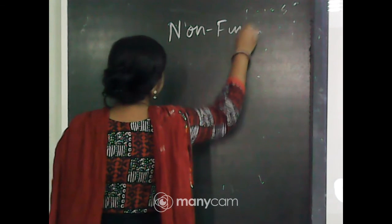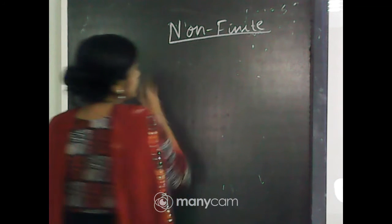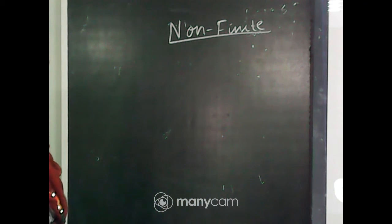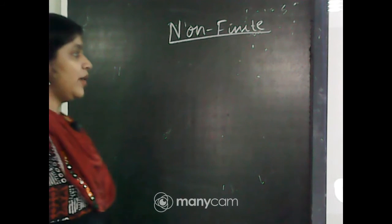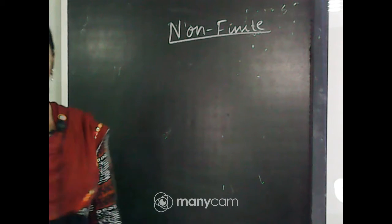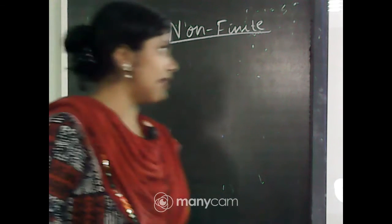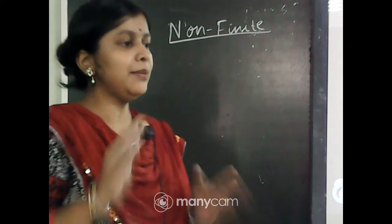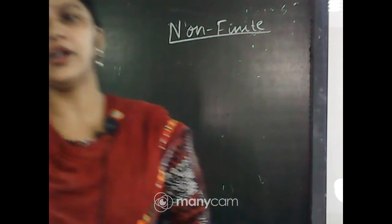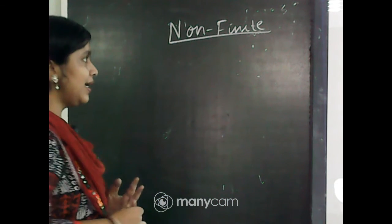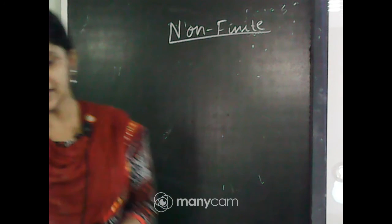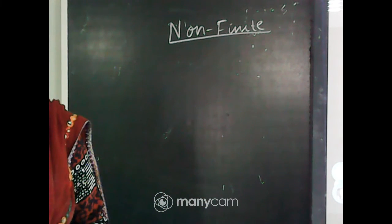The chapter that we had started was non-finite verbs. So one of you please tell me till which exercise we have done. I will keep 10 minutes for answering your queries for any kind of doubts you might have regarding the PT1 exam. So for now let us start studying non-finite verbs. I think we have completed till exercise number G — no, till exercise number F we have completed.